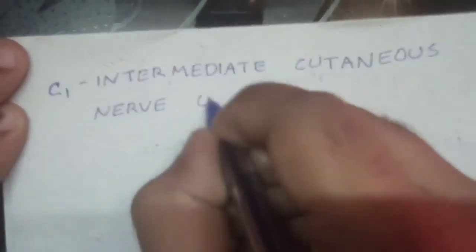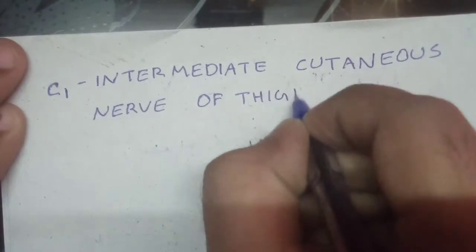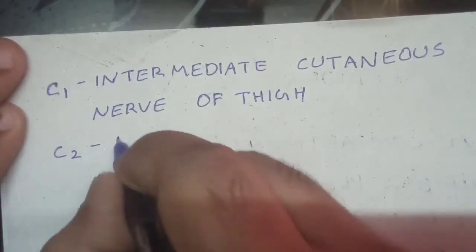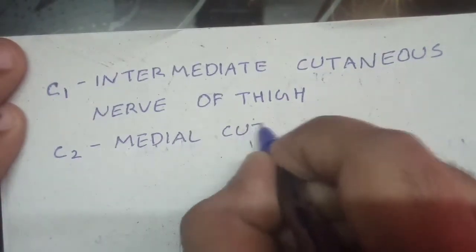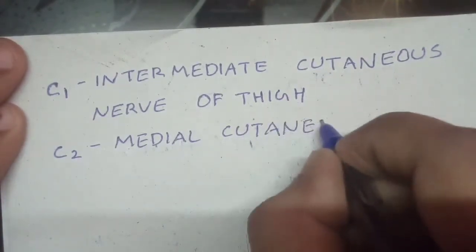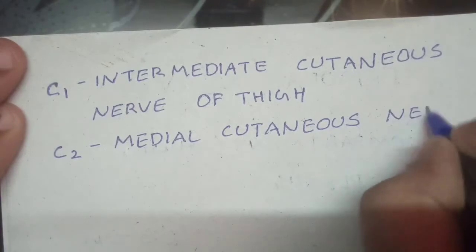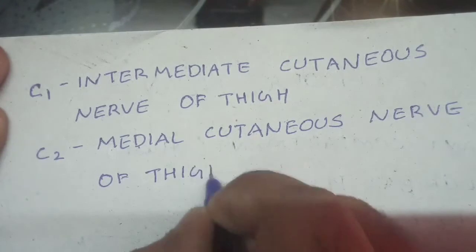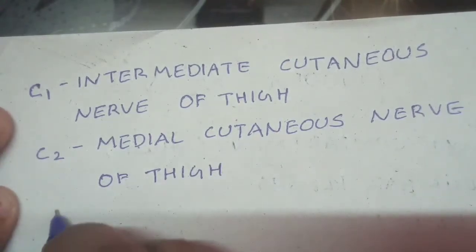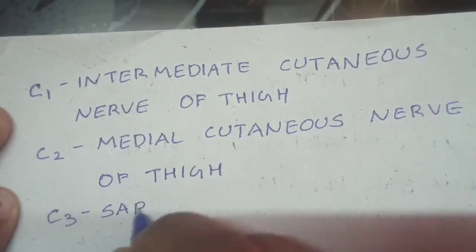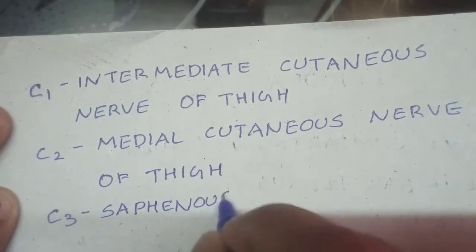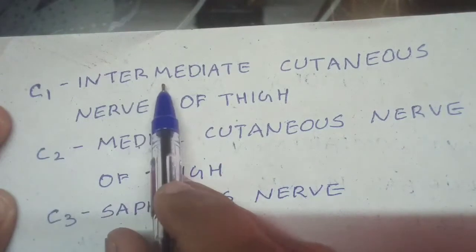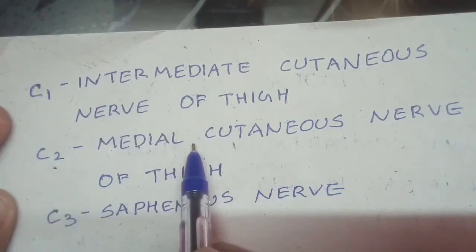C2 represents the medial cutaneous nerve of the thigh, and C3 is the saphenous nerve. So you need to memorize C1, C2, and C3 for the cutaneous branches of the femoral nerve.